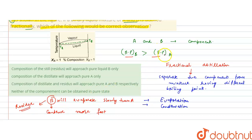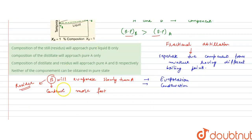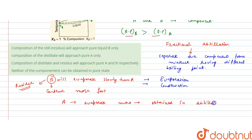And A, having a lesser boiling point, will evaporate more, so it is obtained in the distillate. We can say that B will be present in the residue because it has a higher boiling point — it will evaporate less, require higher temperature to evaporate, but condense more fast, so it will be obtained in the residue. But A has a lesser boiling point, so it will evaporate at a lesser temperature, evaporate more, and is obtained in the distillate.